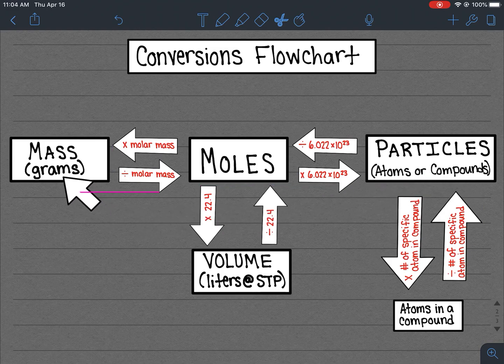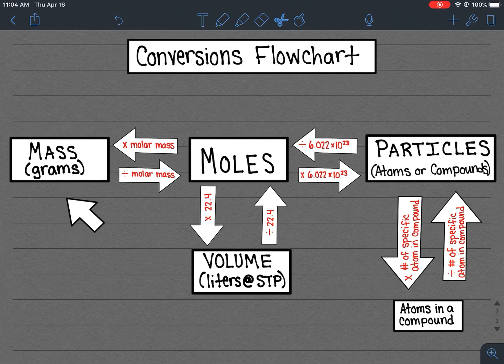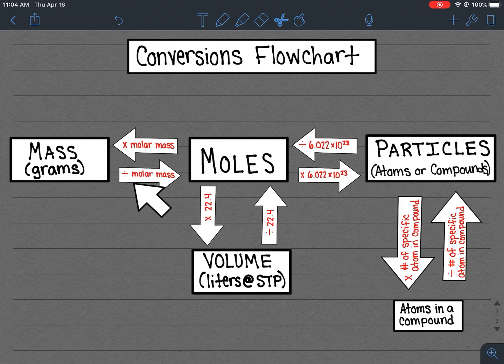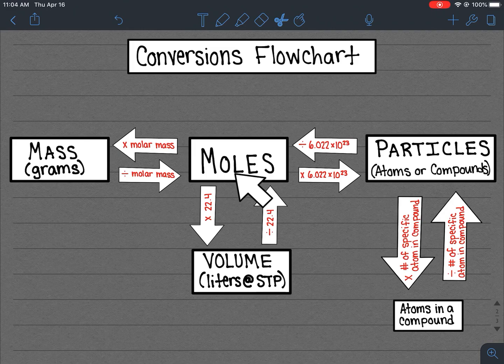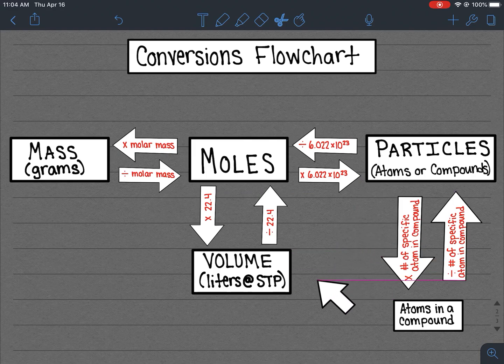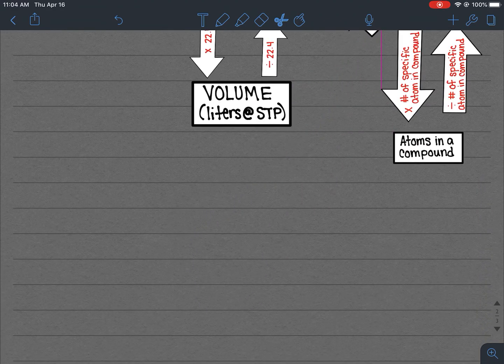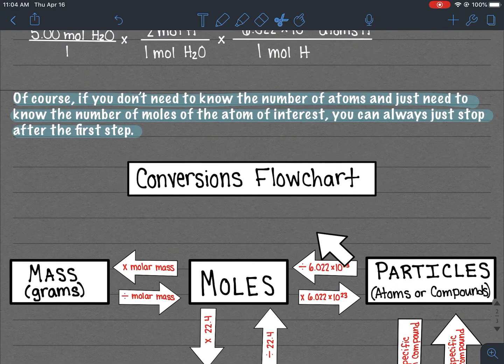Now we could do the same thing if we're just dealing with a single element. So if it's saying how many atoms of hydrogen are in a sample of five grams of just hydrogen atoms. Again, we would take the starting mass, divide by the molar mass of hydrogen, which is 1.01. That will give us moles of hydrogen and then we would just multiply by Avogadro's number to get the number of atoms. This is the exact thing that you guys have been doing in dimensional analysis.